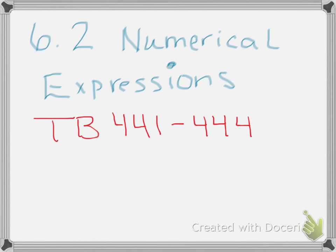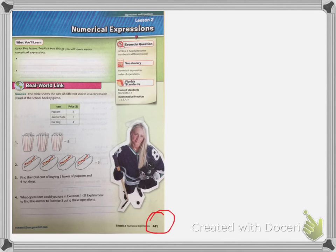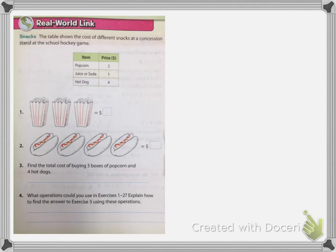Today we're going to talk about Chapter 6, Section 2, which is Numerical Expressions. This chapter starts on textbook page 441 and goes through textbook page 444. On this slide you'll see that I've circled the page number in red. You should be on textbook page 441 — it looks like this with the hockey girl on the side. On the next slide we're going to see a zoomed-in section.